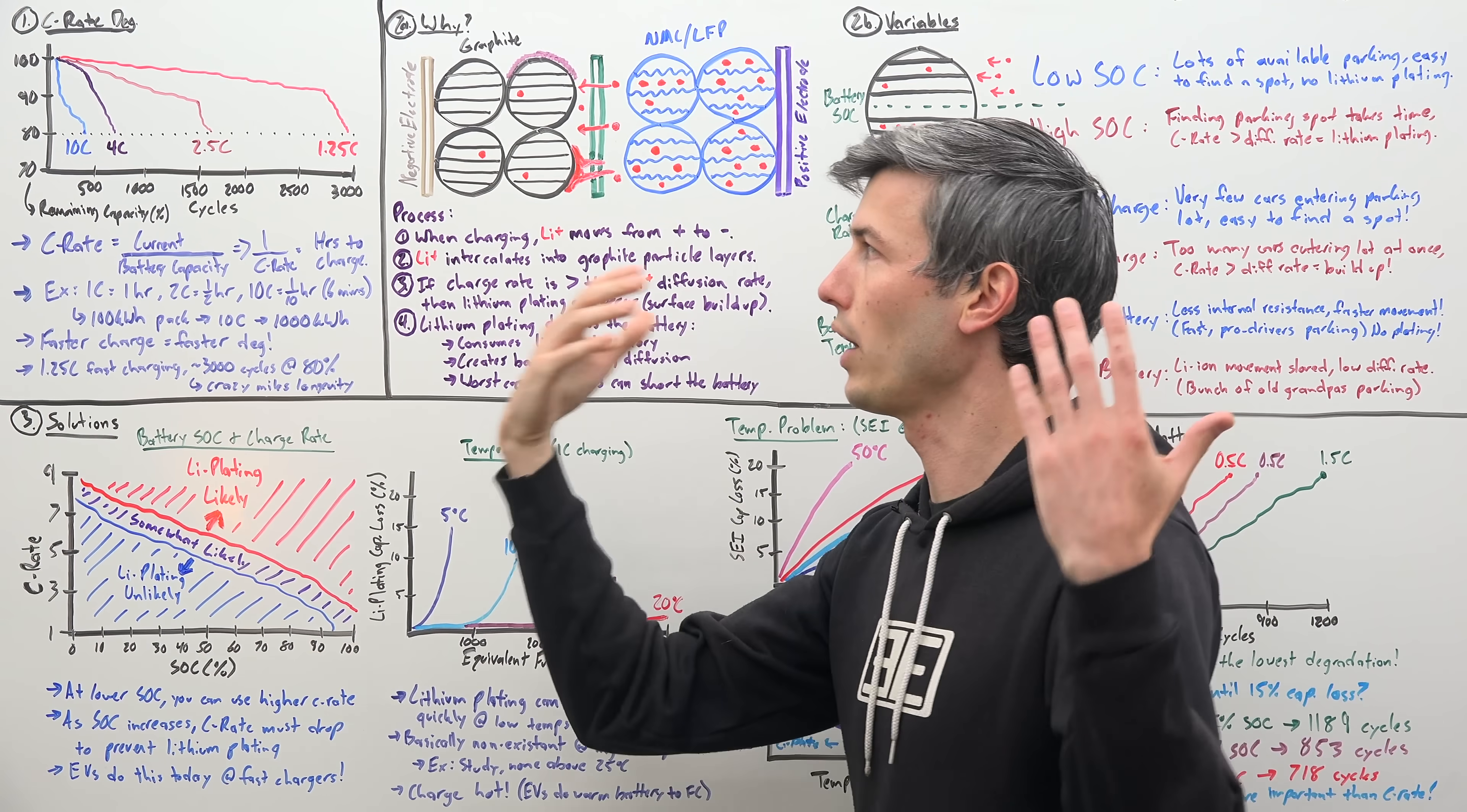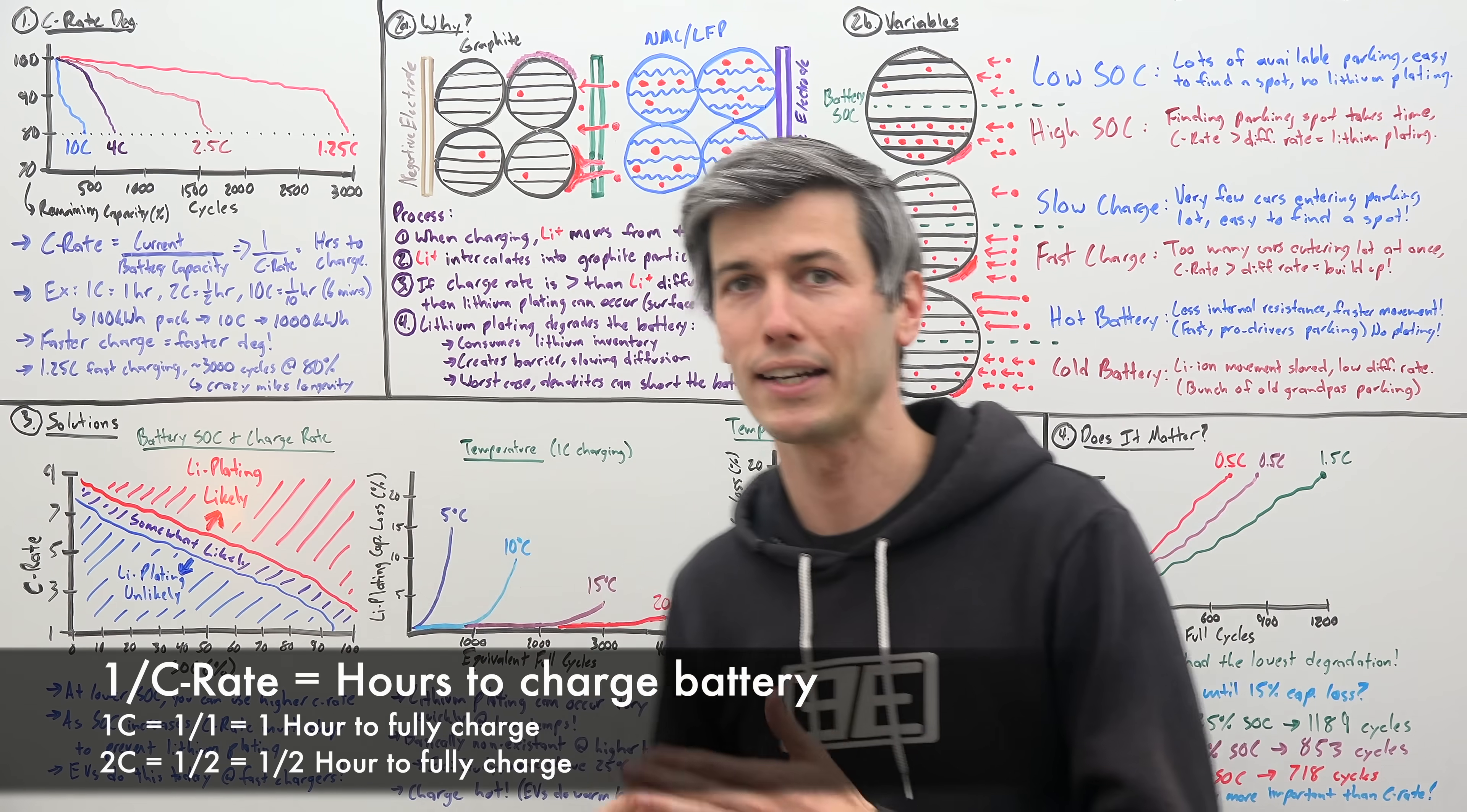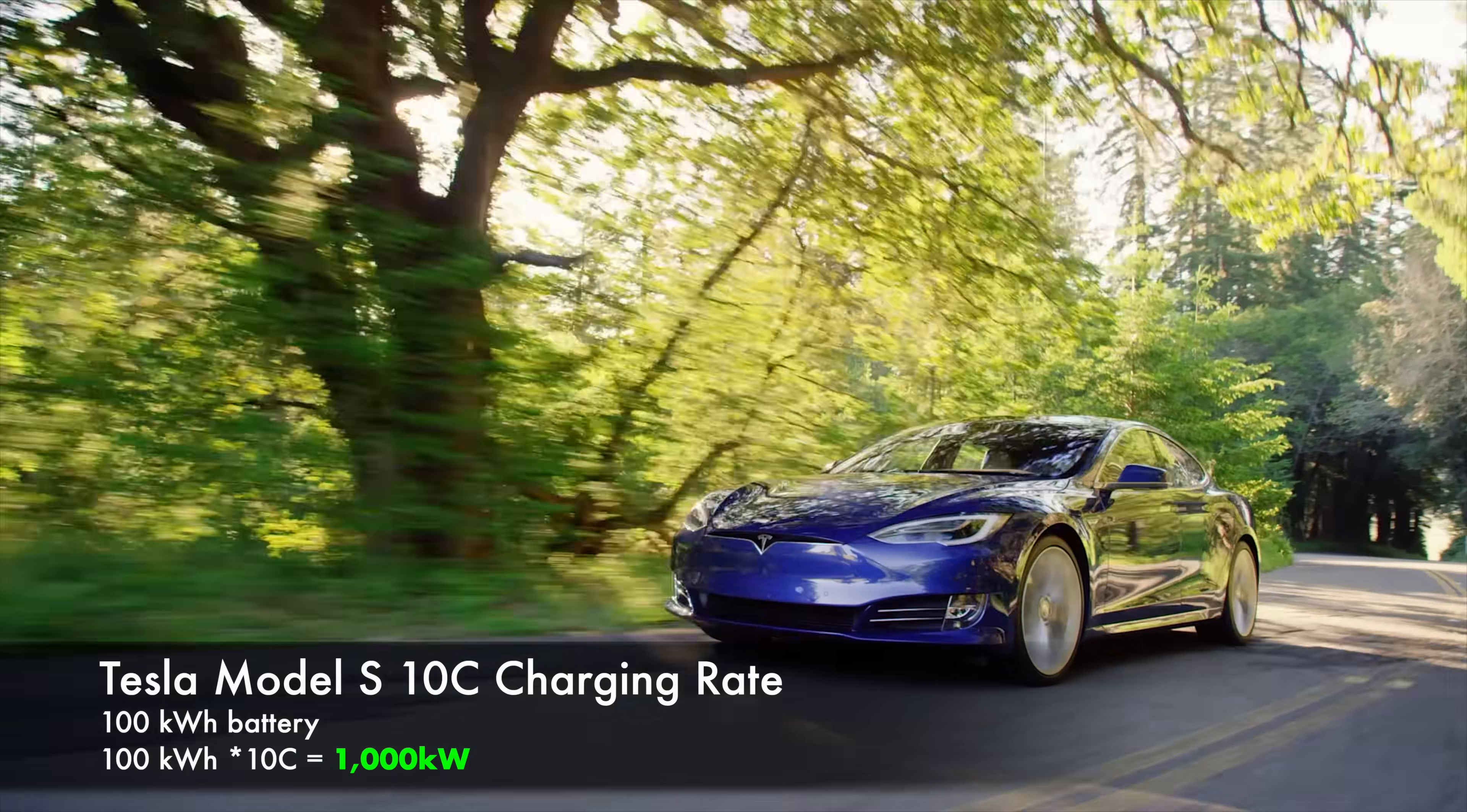So to understand what is C-rate, basically this is allowing us to compare any different size battery. It's just relative to the battery size itself. So 1 over the C-rate tells you how many hours it takes to charge a battery. So in other words, if you're charging at a 1C-rate, it takes one hour to charge the battery. If you're charging at a 2C-rate, it takes one half hour to fully charge the battery. If you're charging at a crazy fast 10C-rate, it means it only takes one tenth of an hour or six minutes to fully charge that battery. So if you were to do that with a Tesla Model S, which has a hundred kilowatt hour battery pack, well, that means you'd be charging it with a thousand kilowatts of power crazy fast.